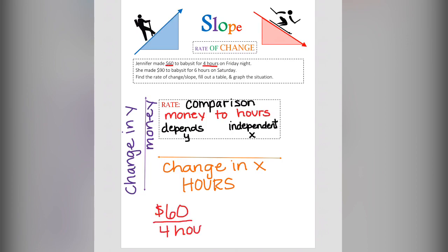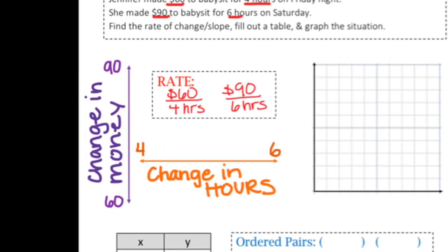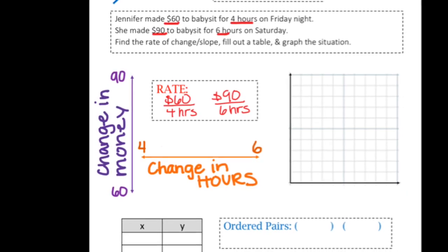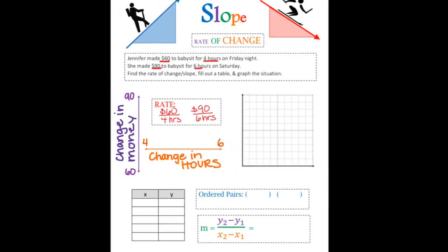We can create two ratios, $60 to 4 hours, and $90 for 6 hours, from the word problem. This shows the change. You can see both her change in hours and the change in money.